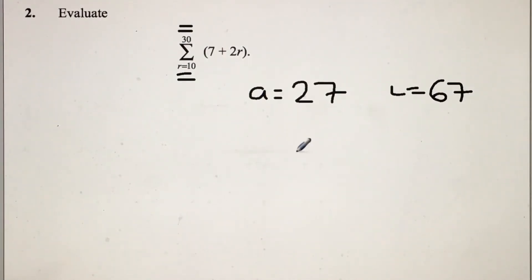Since I know the last number, which is 67, I'm going to be using this equation: N divided by 2, open bracket, A plus L, close bracket.